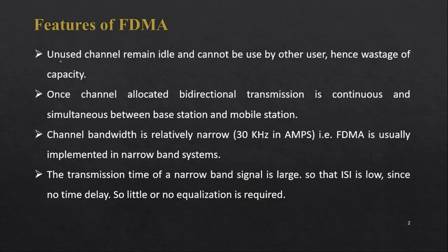A key feature of FDMA is that unused channels remain idle and cannot be used by other users, which leads to wastage of capacity since each channel is dedicated to one user only. Once the channel is allocated, bi-directional transmission is continuous and simultaneous between the mobile station and the base station.